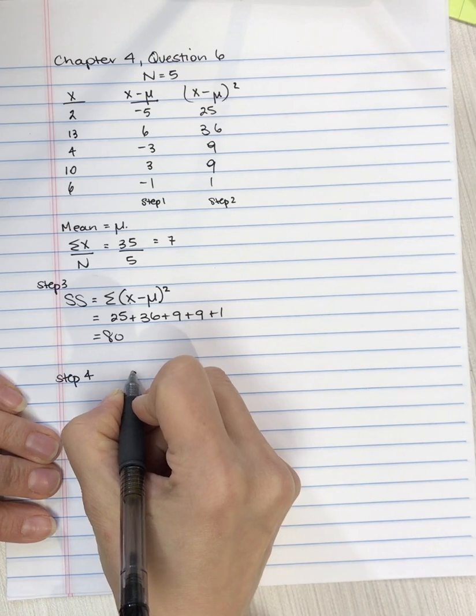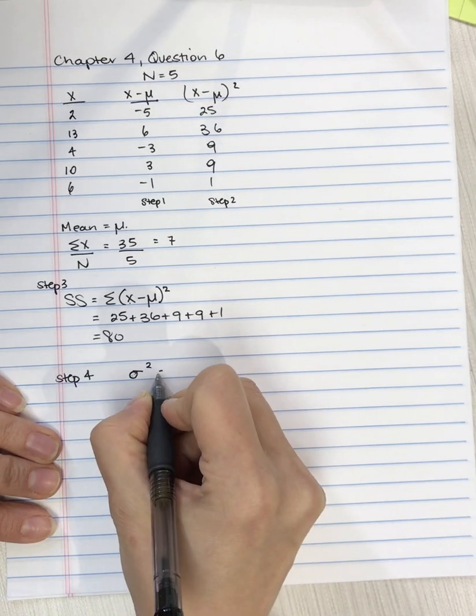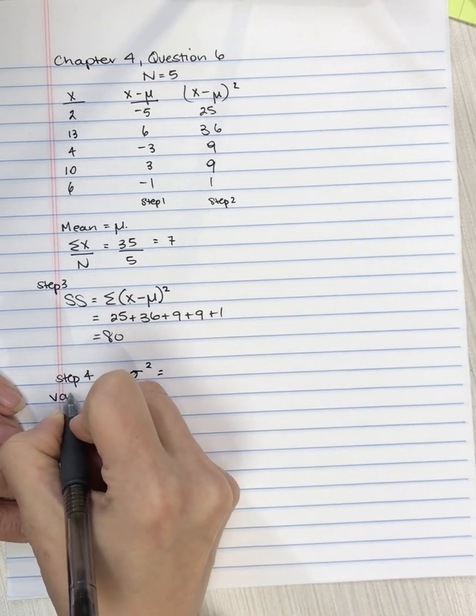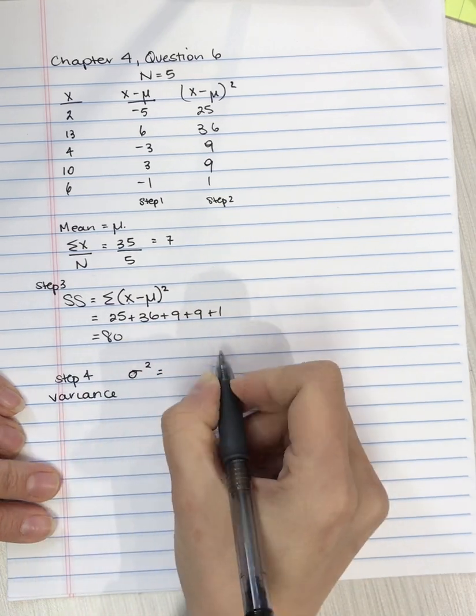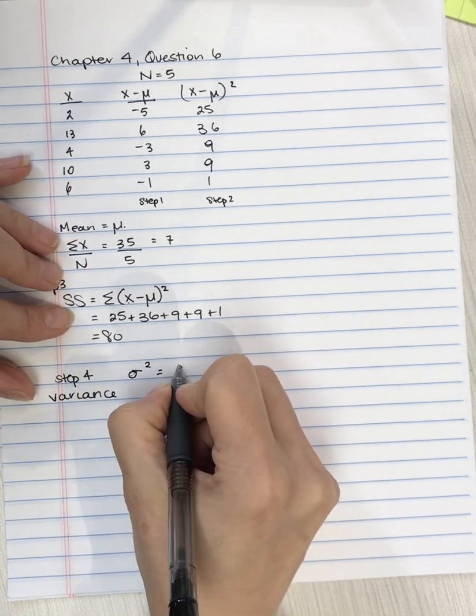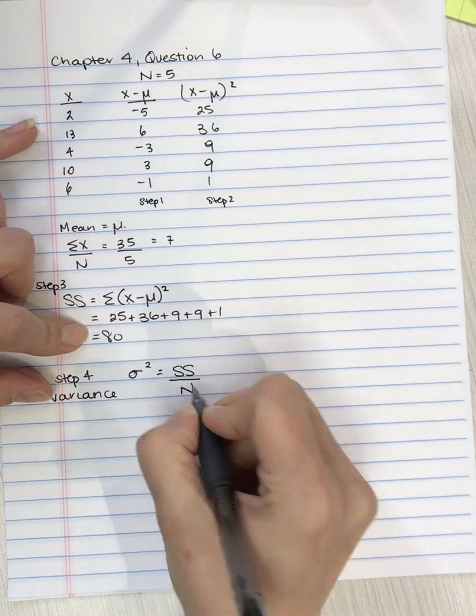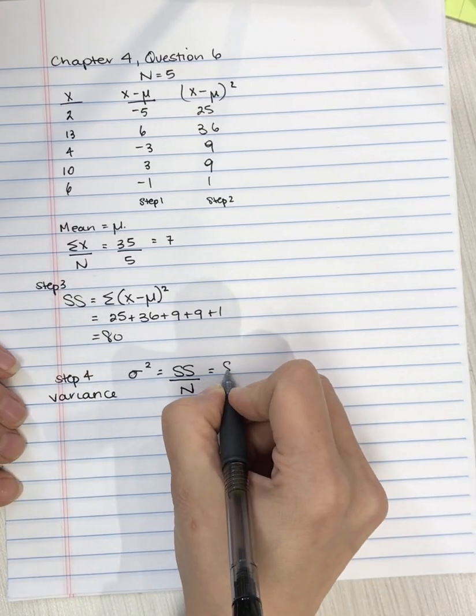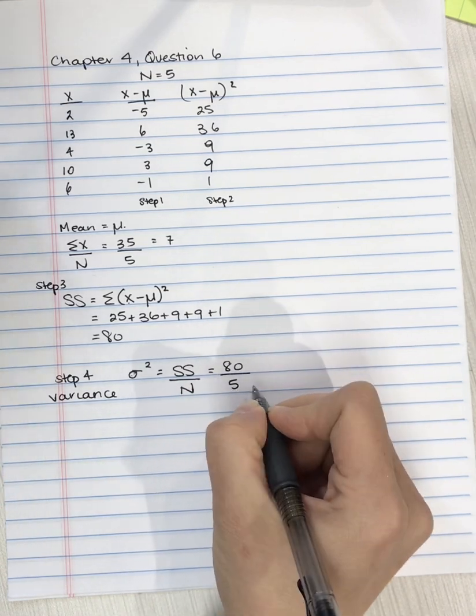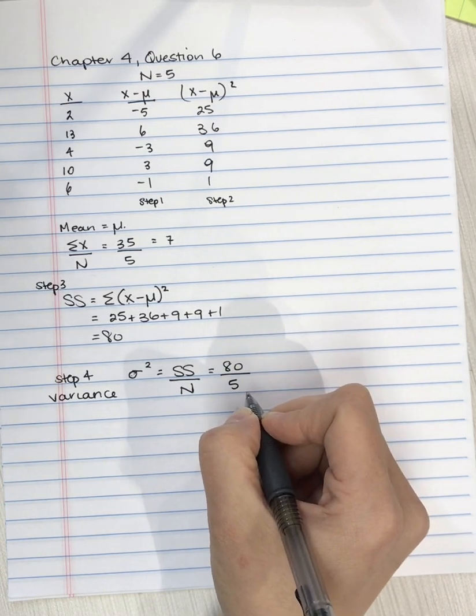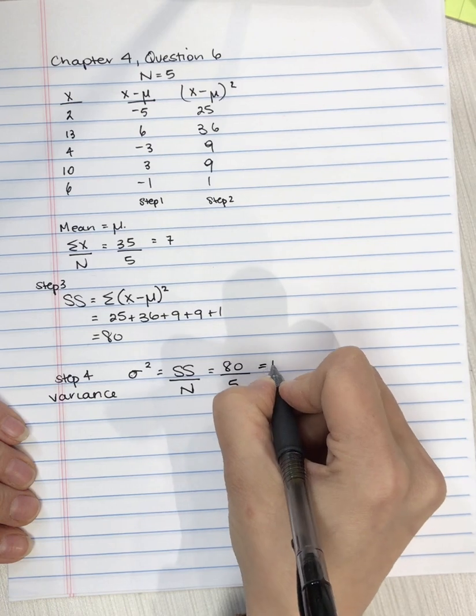And what we're going to do is we're going to take the sum of squares that we calculated in step 3, and we're going to divide by big N, because we have a population. So we're going to take 80, and we'll divide it by 5. And that's equal to 16.